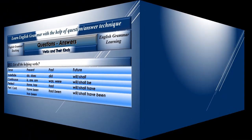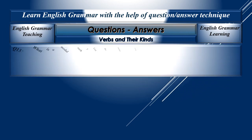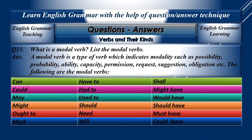Question number thirteen: What is a modal verb? List the modal verbs. A modal verb is a type of verb which indicates modality such as possibility, probability, ability, capacity, permission, request, suggestion, obligation, skill, etc. The following are the modal verbs: can, could, may, might, ought to, must, have to, had to, used to, should, need, will, shall, might have, would have, should have, must have, could have. All these are modal verbs.